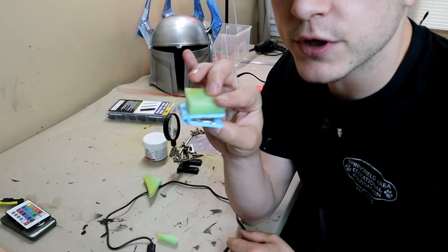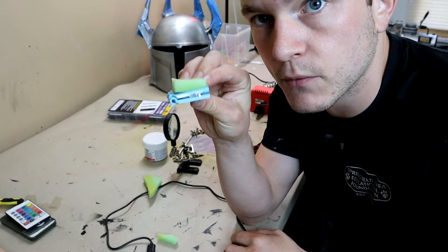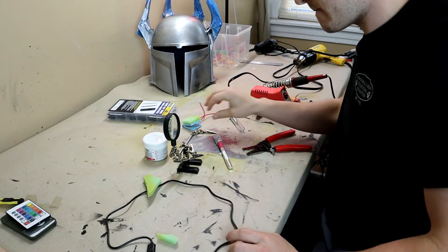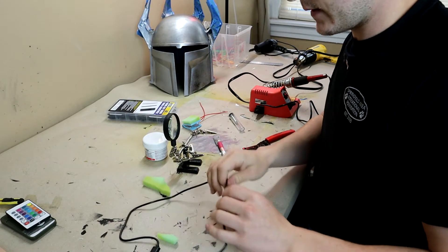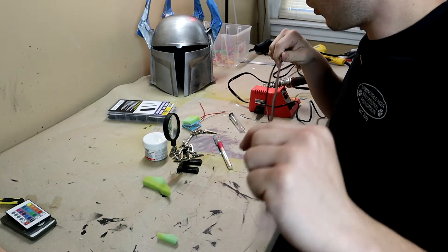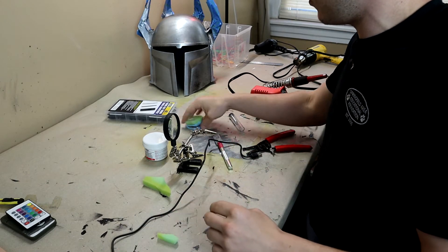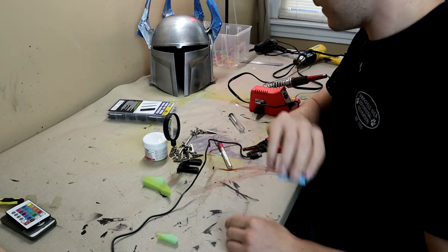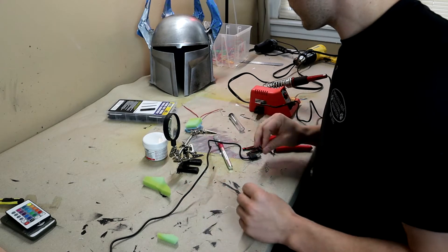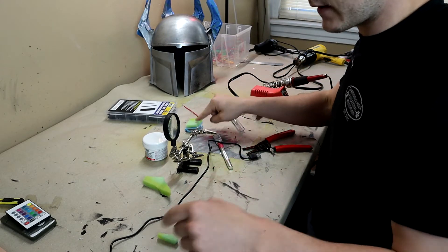So this is the switch, this just goes in the top of the helmet and when I put the helmet on it presses the plates together. And this is the cord that connects the battery bank to the LED strip, so I just need to solder this into the hot wire on this so that when this is pressed it completes the circuit.